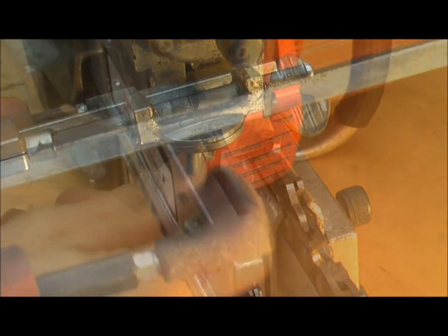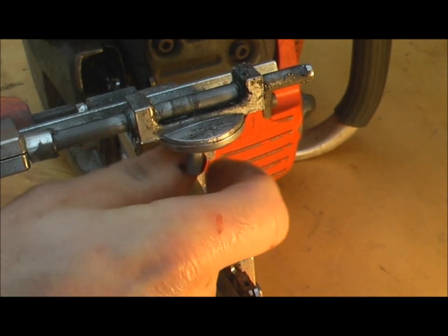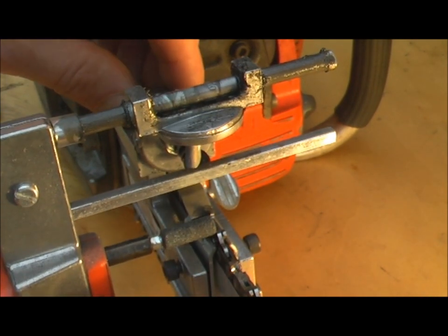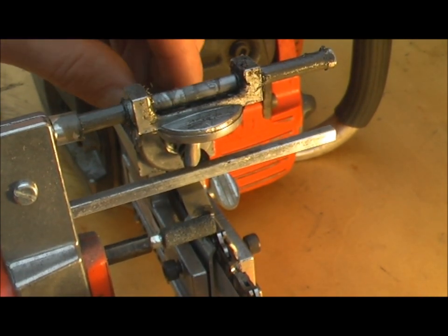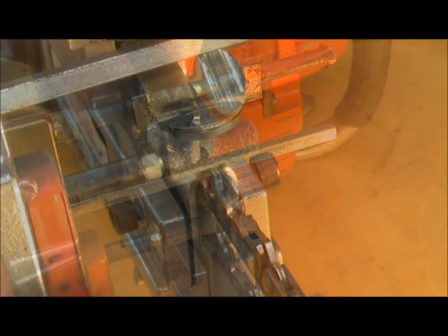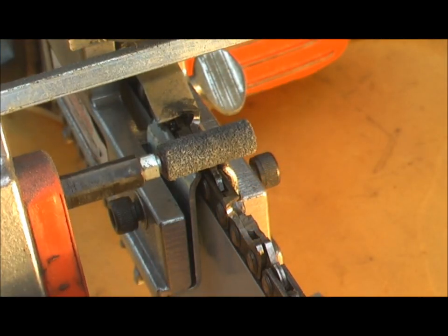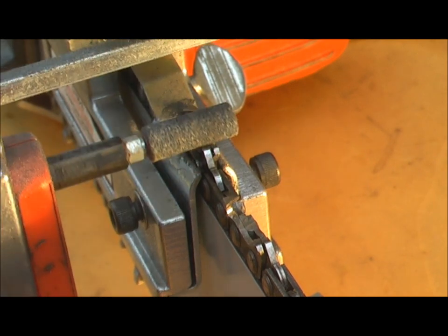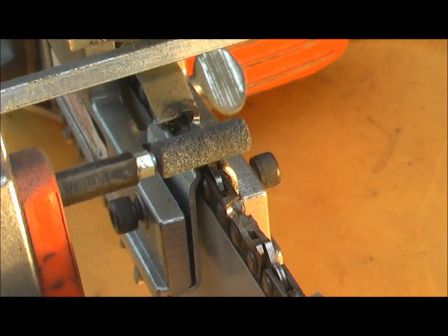So you'll find you need to extend the back stop almost right out for this. So you can see I'm swinging that over the depth gauge. I'm just catching him slightly there.